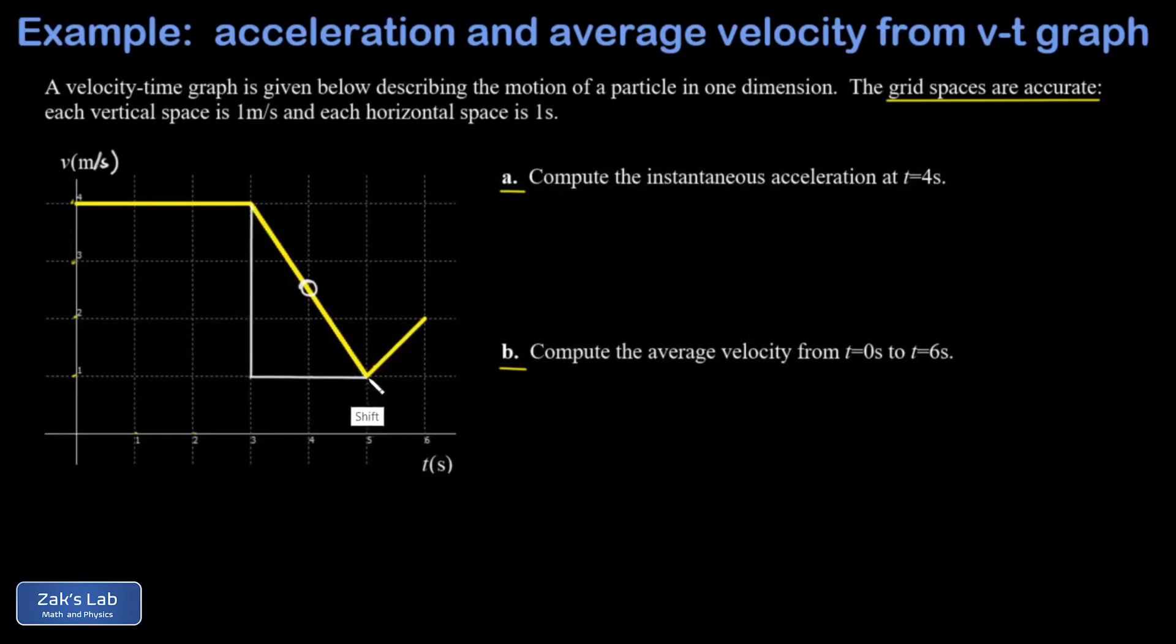Then I look at the rise between these two points as t goes from three to five, and the rise is going to be a negative number, that's a negative three meters per second, and the run is a positive two seconds.